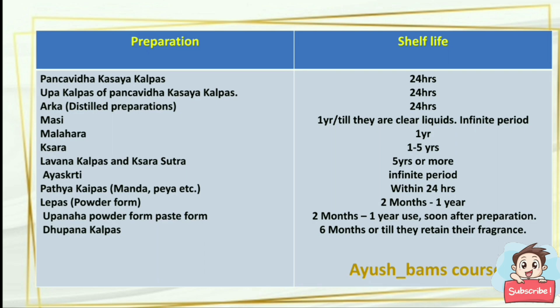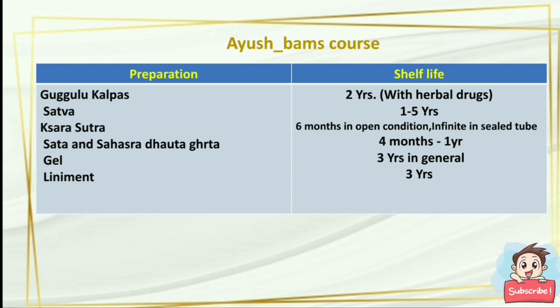Arka's shelf life is 24 hours. Mashi shelf life is one year or until they remain clear liquids. Malahara shelf life is one year. Kshara shelf life is one to five years. Lavana kalpana and kshara sutra shelf life is five years or more. Ksara shelf life is infinite. Patha kalpana shelf life is within 24 hours. Lepas have a shelf life of two months to one year. Upanaha in powder and paste form has a shelf life of two months to one year. Dhupana kalpa shelf life is six months or until they retain their fragrance. Guggulu kalpa lifetime is two years. Sattva shelf life is one to five years. Kshara sutra lifetime is six months in open condition but can last forever if sealed. Sahasra dhatu ghrita has a shelf life of four months to one year. Gel has a shelf life of three years, and liniment has a shelf life of three years.